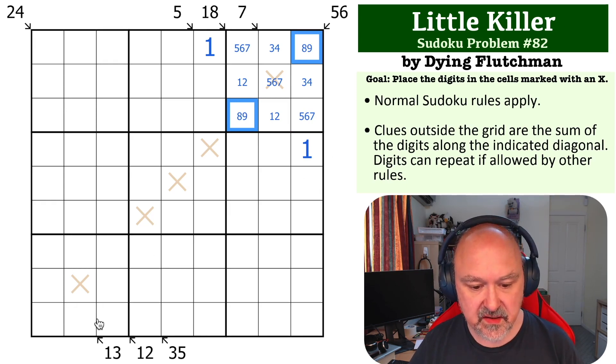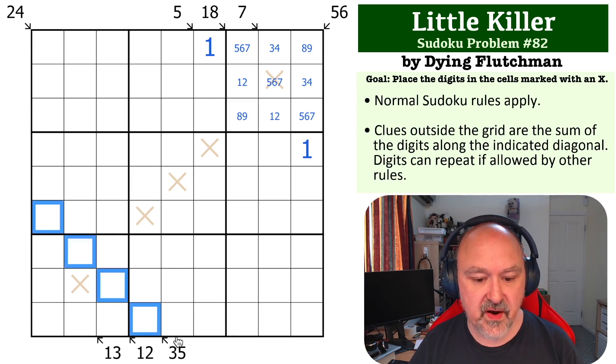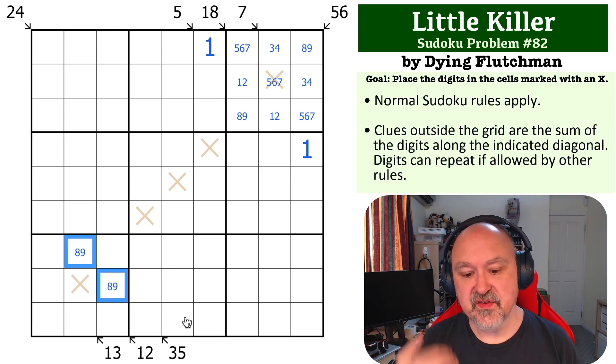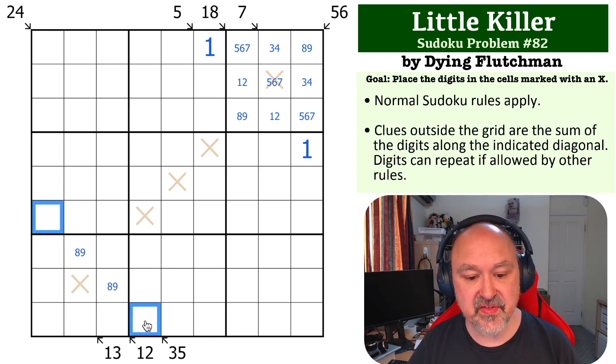Now we can do something similar down here. We've got a 35 clue. If you think about a 35 clue, if we made these the maximum that they could possibly be, which is 8, 9, those are 17. If you subtract 17 from 35, you still have 18 left.